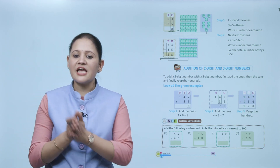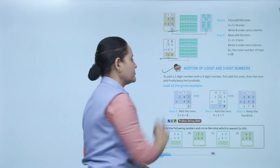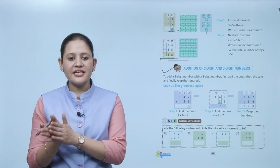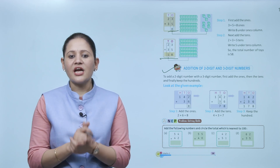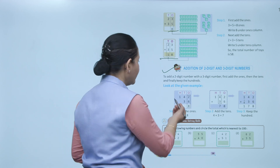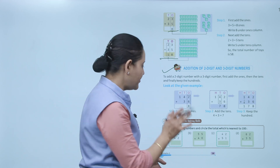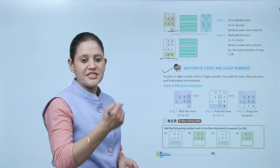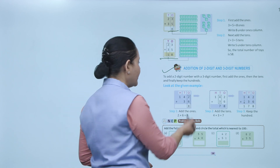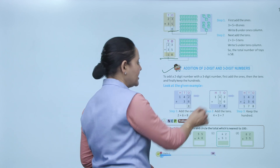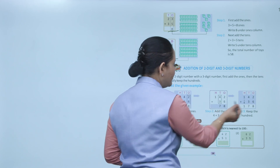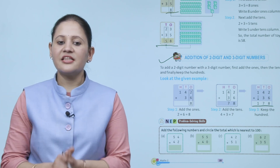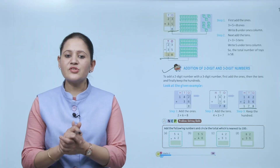Addition of a two-digit and three-digit number: To add, first add the ones, then tens, then keep the hundreds. Example: 142 plus 36. Always write ones below ones, tens below tens, hundreds below hundreds. Start from ones — 2 plus 6 is 8. Then tens — 4 plus 3 is 7. Then hundreds — 1. So the total is 178.